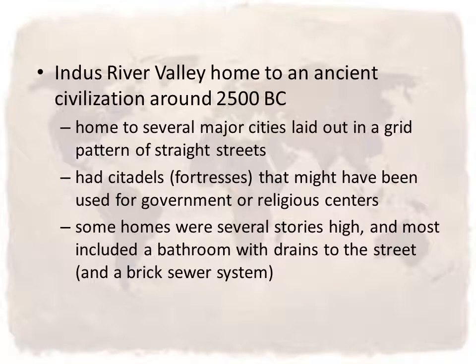The Indus River Valley was home to an ancient civilization around 2500 B.C. It was home to several major cities, all laid out in a grid pattern of straight streets, much like some of our major cities today. These cities had citadels, which were fortresses, and we think they might have been used for government or religious centers. The Indus River Valley also had homes that were several stories high, and most of these homes, believe it or not, included a bathroom with drains to the street and a brick sewer system, which was very organized for this point in history.